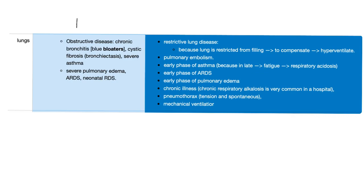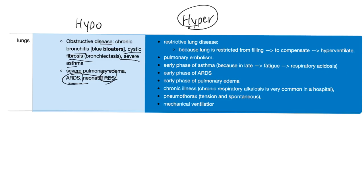Lung problems leading to hypoventilation include obstructive lung diseases such as chronic bronchitis, cystic fibrosis, severe asthma, severe pulmonary edema, ARDS, and neonatal RDS. Causes of hyperventilation in the lung include restrictive lung disease, pulmonary embolism, early phase of asthma, fat embolism, early phase of pulmonary edema, chronic illness, pneumothorax, and mechanical ventilation.